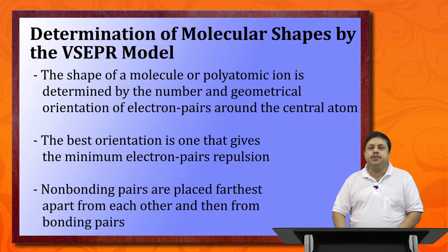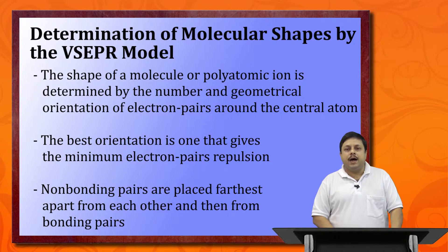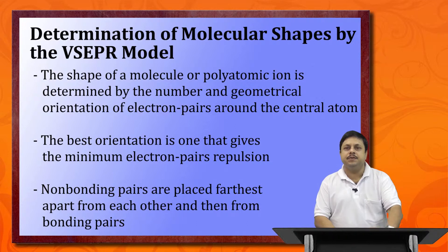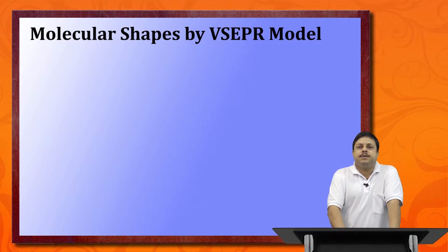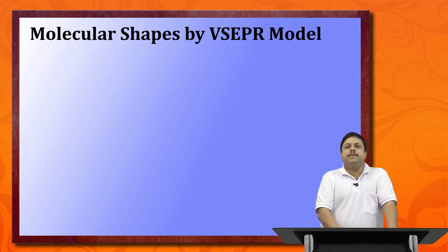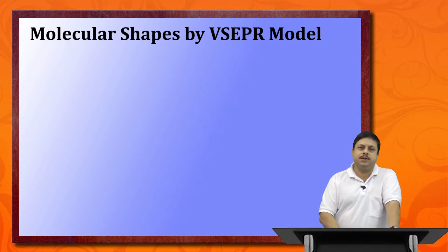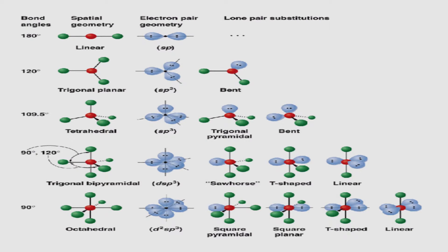The repulsion between a non-bonded pair and a bonded pair is intermediate, and the least repulsion is experienced by two bonded pairs of electrons. Since electrons are the true descriptor of chemical properties associated with atoms and molecules, the VSEPR model essentially tries to predict and provide an account of the molecular shapes of complex molecular structures.